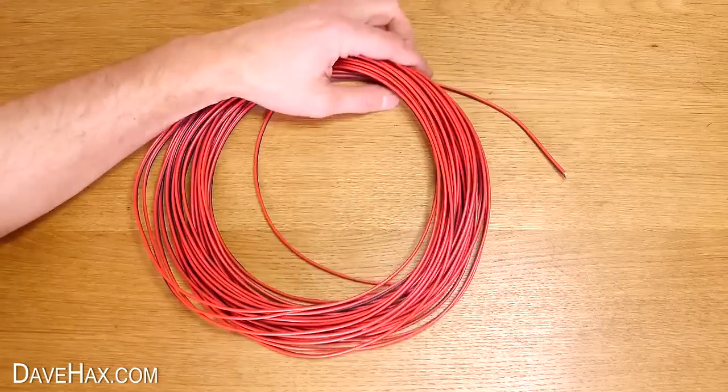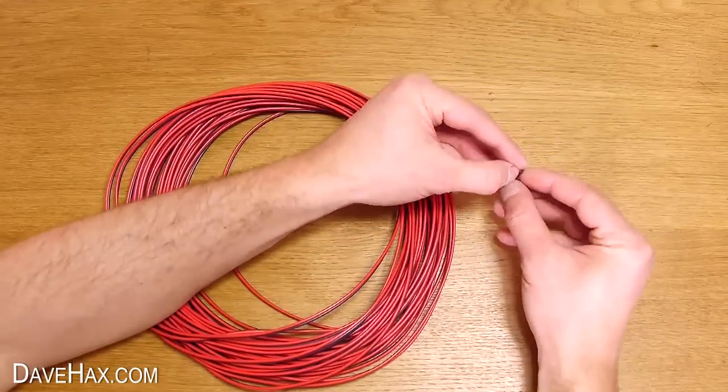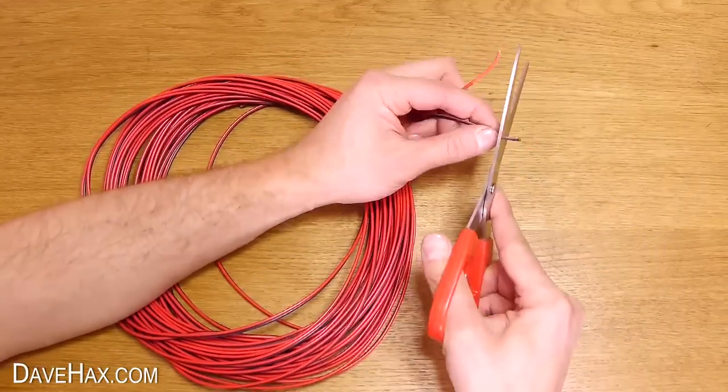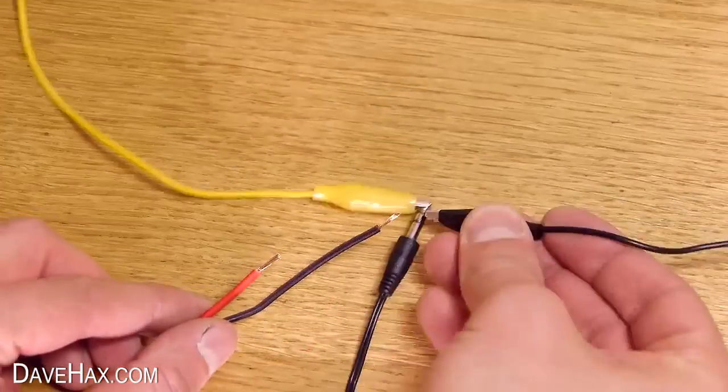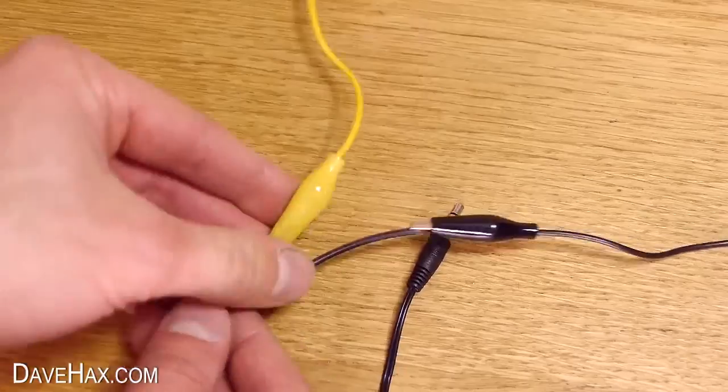We're now going to extend the cable so we can use it in a different room. Take some speaker cable and strip back the ends, like this. We're then going to disconnect our earphones and connect the clips onto the speaker wire.